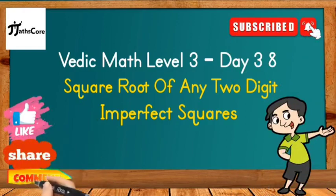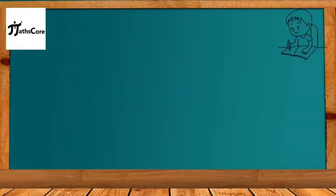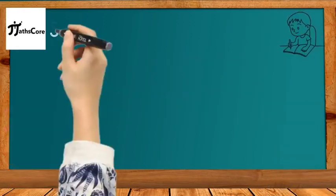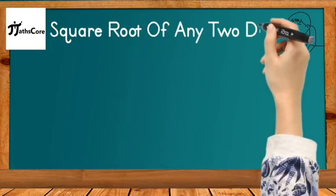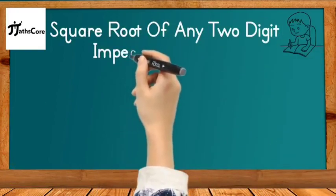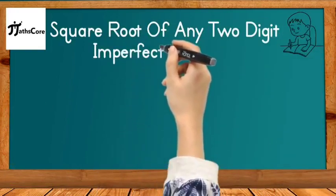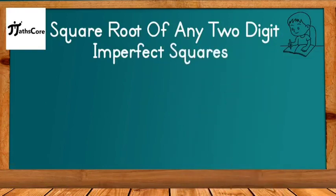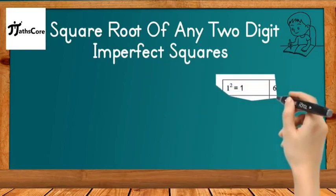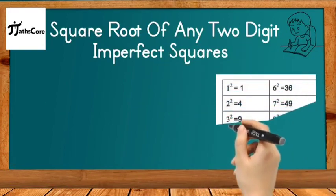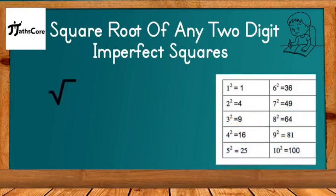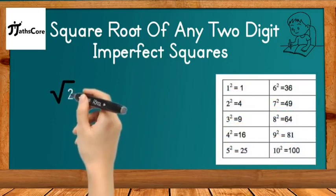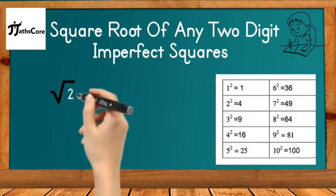For this video, let us solve some examples. To find out the square root of any two-digit imperfect square, we need to know the squares of digits one to nine very well. I have mentioned the squares of one to nine digits here. Now let's take an example — the square root of 26.